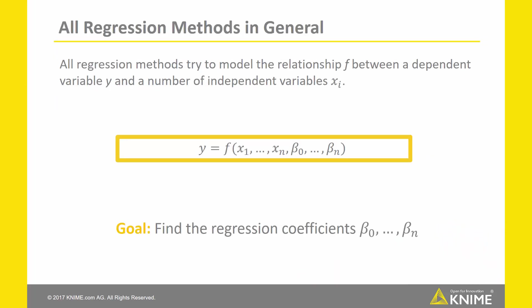As in all other types of regressions, the logistic regression models the relationship between a dependent variable — sometimes also called a category, class, or target — and one or more independent variables, also known as input features, with the help of some regression coefficients. We call the dependent variable Y, the N independent variables X1 to XN, and the regression coefficients beta 0 to beta N. The goal, then, is to find the regression coefficients.